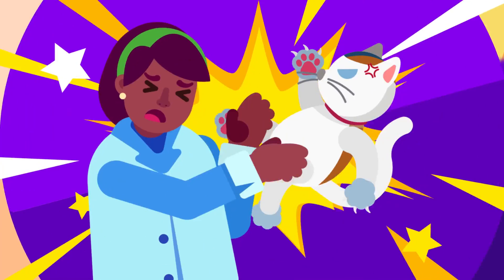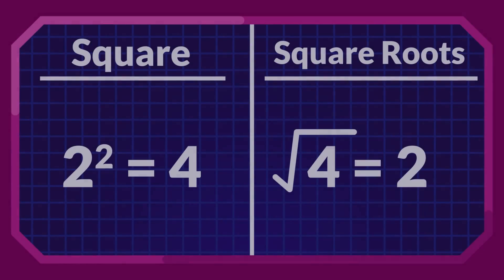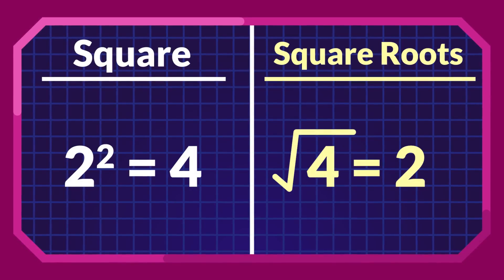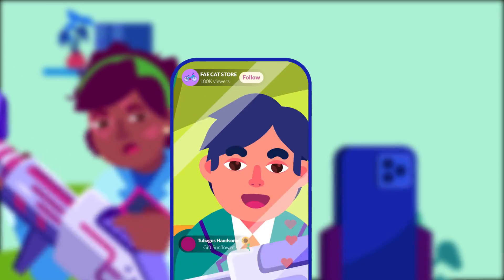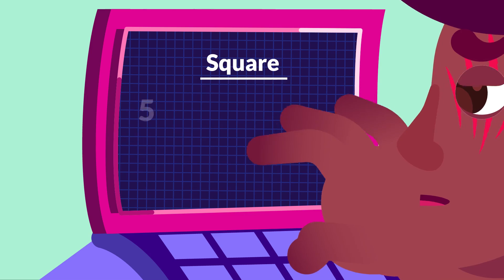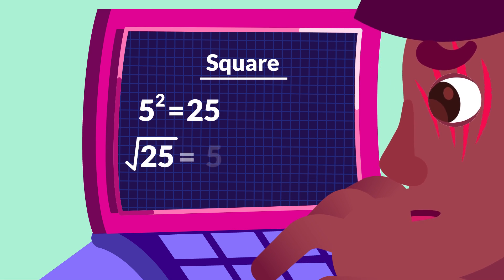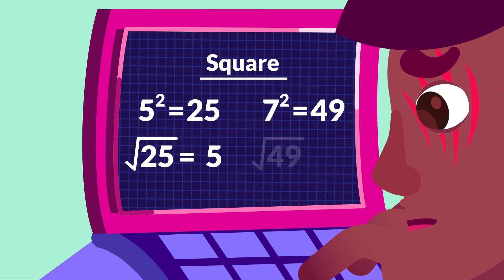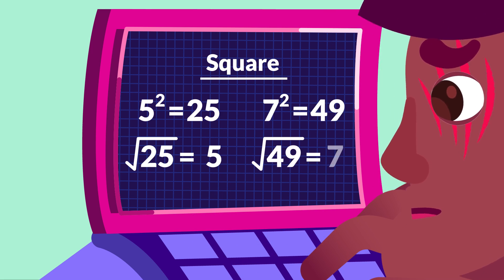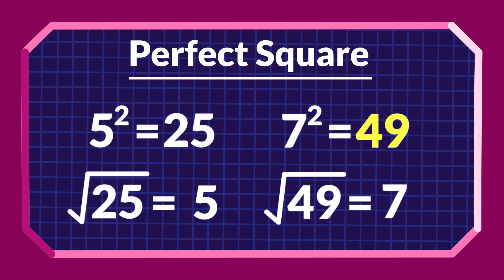In our previous video, we learned about square and square roots. We've already known that the square root's operation is the inverse of the squaring operation. For example, when you square 5, you get 25, and its square root is 5. Similarly, 7 squared is 49, therefore the square root of 49 is 7. These special numbers, like 25 and 49, are called perfect squares.